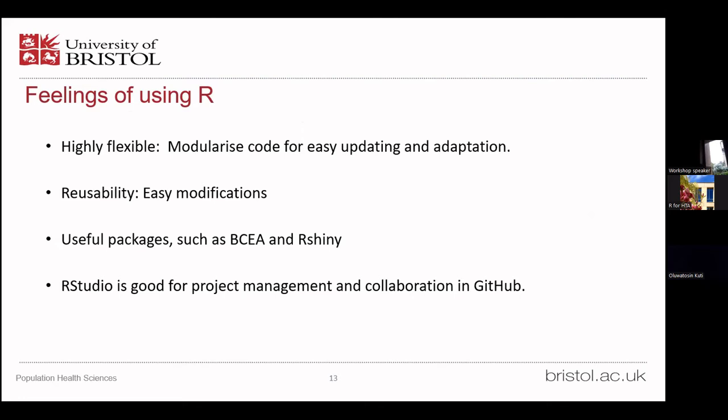Finally, I want to share my thoughts on using R. I think it's very convenient to use R for modeling — it's highly flexible, giving users opportunities to modularize code for easy updating and adapting. It's also very reusable: even if the assumptions are changed, users can just make a modification and get new results. It has lots of useful packages, such as the BCEA package and the Shiny package used in this project. It makes modeling much easier, and R Studio is also good for project management and collaboration in GitHub.